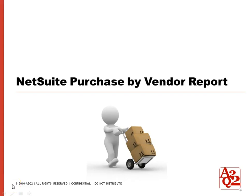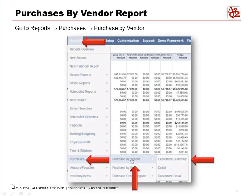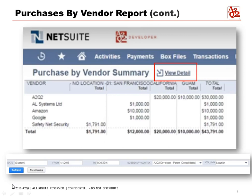Let's talk about the Purchase by Vendor report in NetSuite. This is another typical report that our clients ask us about, and we wanted to share some tips with you. From the home page, go to Reports > Purchases > Purchase by Vendor. You can select Customize Summary, Detail, or Customize Detail.